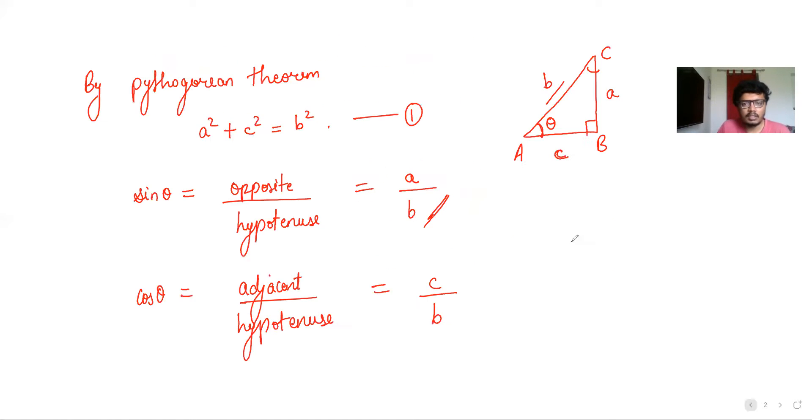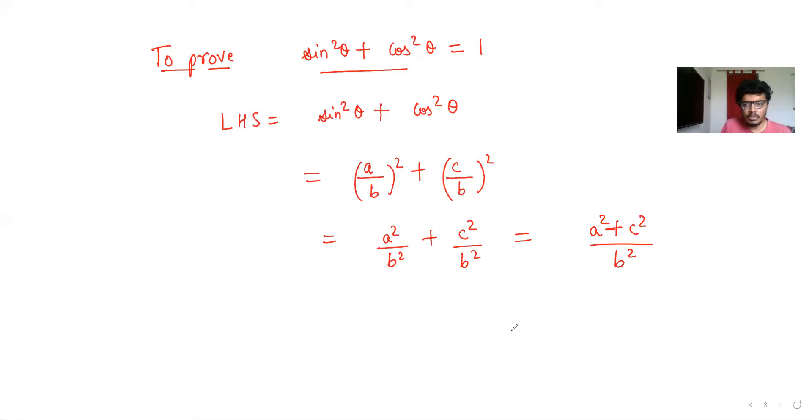Now note that by equation 1 we have a² + c² is equal to b². This is by Pythagorean theorem. So we can replace a² + c² by b².